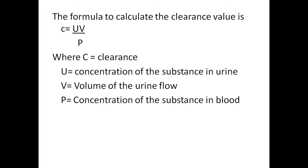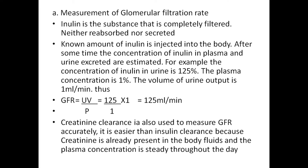Measurement of glomerular filtration rate — inulin is a substance that is completely filtered, neither reabsorbed nor secreted. A known amount of inulin is injected into the body. After some time, the concentration of inulin in the plasma and the urine excreted are measured. For example, if the concentration of inulin in urine is 125%, plasma concentration is 1%, and volume of urine output is 1 ml per minute, then GFR = UV/P = 125 × 1 / 1 = 125 ml per minute.